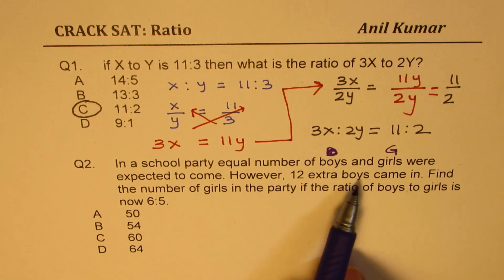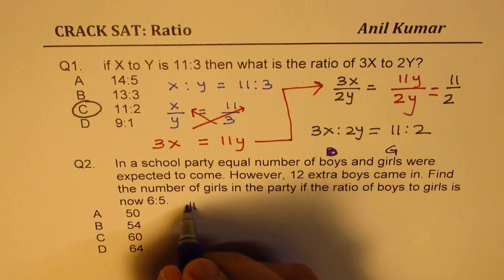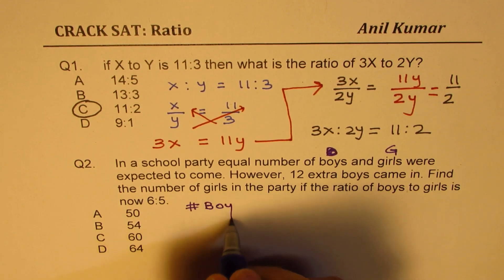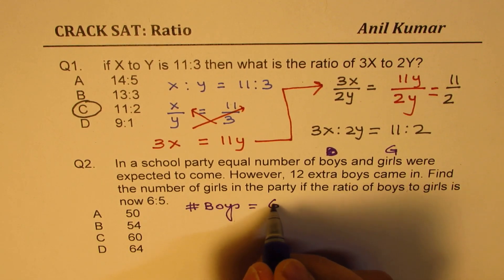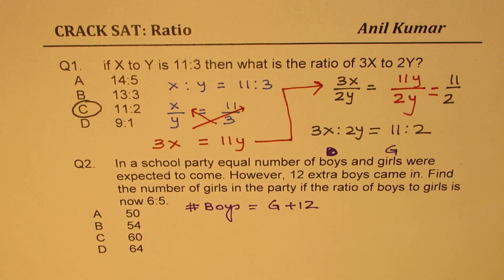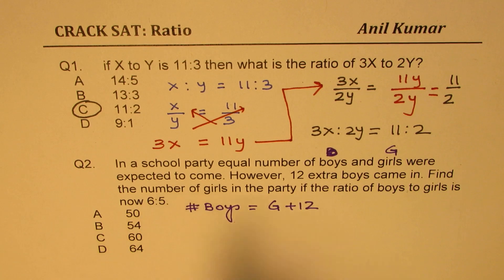However, 12 extra boys came in. So that means the number of boys equals to number of girls plus 12, right? So find the number of girls in the party if the ratio of boys to girls is 6 is to 5.